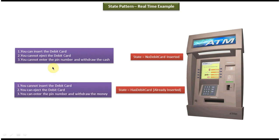Once the card is inside the machine, the state of the ATM is 'Has Debit Card', meaning the debit card is already inserted in the slot. In this state, you cannot insert another card because one is already there. However, it allows you to eject the debit card, enter the pin number, and withdraw money, because the card is already inserted.